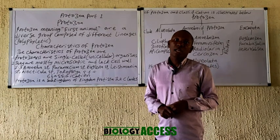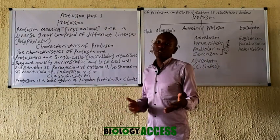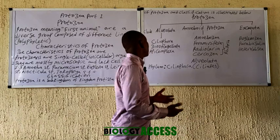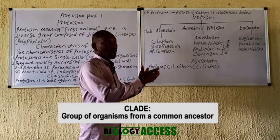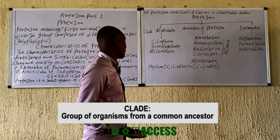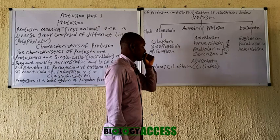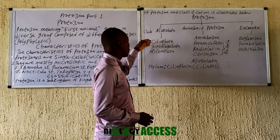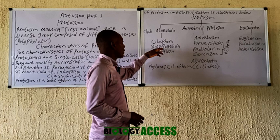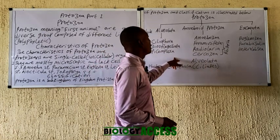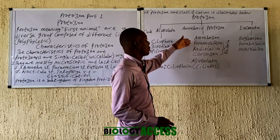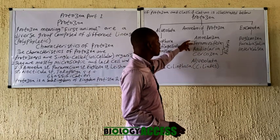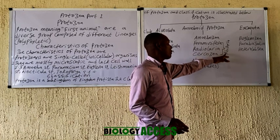Classification of Protozoa: Protozoa is actually a sub-kingdom and is divided into various clads — meaning organisms that originate from a single ancestor. The clads include Alveolata, the Amoeboid Protozoa, and the Excavata. The Alveolata group comprises the phyla Ciliophora, Dinoflagellata, and Apicomplexa. The Amoeboid Protozoa clad consists of the phyla Amoebozoa, Foraminifera, Radiolaria, and Cercozoa. Note that these three groups are placed under a superphylum called Rhizaria.